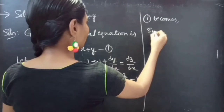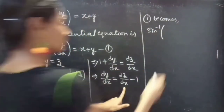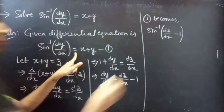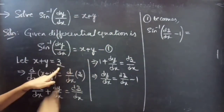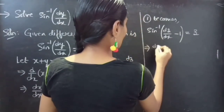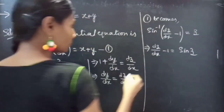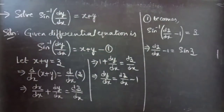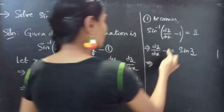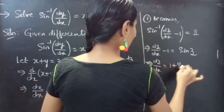So equation 1 becomes: sine inverse of (dz/dx minus 1) equals x plus y. Replace x plus y by z, then sine inverse of (dz/dx minus 1) equals z, which gives dz/dx minus 1 equals sine z. Taking minus 1 to the right-hand side, we get dz/dx equals 1 plus sine z.